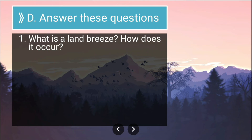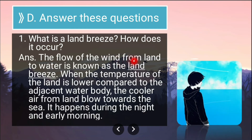Now for long answers. First: what is land breeze and how does it occur? The flow of wind from land to water is known as land breeze. When the temperature of the land is lower compared to the adjacent water body, the cooler air from the land blows towards the sea due to pressure difference. This happens during the night and early morning.